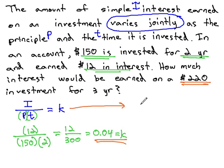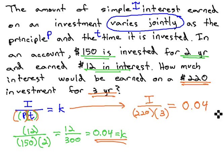$220 is invested, that's the principal. Three years, that's the time. We don't know the interest, which is in the numerator, but we do know the constant will always be, for this situation, 0.04.